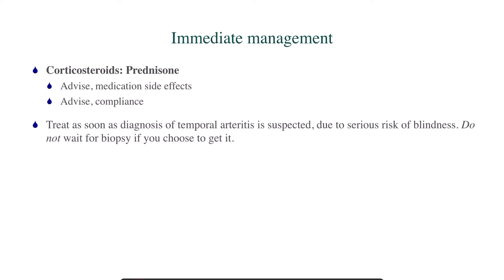The immediate management of presumed temporal arteritis is prednisone. If the patient has more serious symptoms — such as visual field deficits — give IV corticosteroids (solumedrol or methylprednisolone). When giving prednisone, advise the patient about side effects and emphasize the importance of compliance, because even when symptoms resolve they need to complete the full steroid regimen. You should treat as soon as temporal arteritis is suspected, because the number one complication is blindness in the ipsilateral eye. Steroids won't hurt them, but they could very much help them.